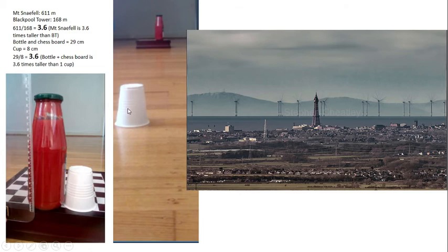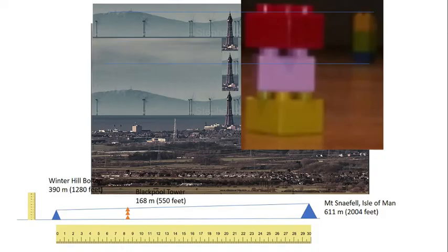Here we have a cup, which is 8 centimeters, a bottle and a chestnut, which is 29 centimeters and exactly the same results.